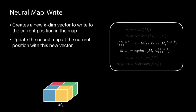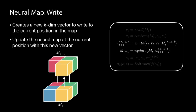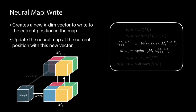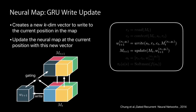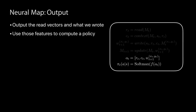For the writing operation, we create a k-dimensional vector of what we're seeing in the environment and update the neural map using our observation. We also use gating, which allows the model not to update the context of the map depending on the environment and hidden state. We then take the read vectors and write vectors and use those features to compute a policy. The entire sequence of operations is differentiable, so we're learning what to write, how to read, and all model parameters.